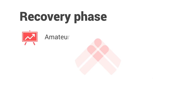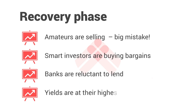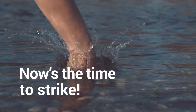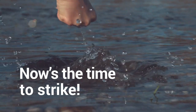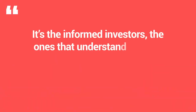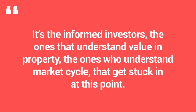Let's start with the recovery phase. Prices are just bottoming out after the crash. Some amateur investors are selling before prices fall further — big mistake. The smart investors are getting stuck in and buying distressed assets. Banks are reluctant to lend and you'll find lending a challenge, not impossible but not easy. The upside is that yields — the return you're making on your property — are really high at this point, the highest because property prices have just come down. Few people buy because you have to be brave, first in, ahead of the trend. It's the informed investors who understand value and market cycles that get stuck in at this point.